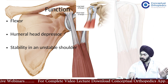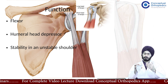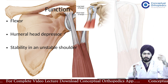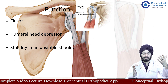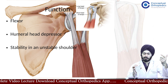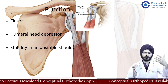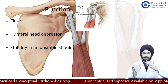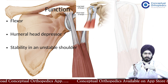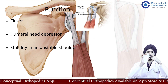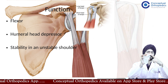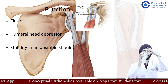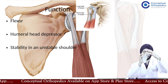When we talk about the function of the long head of biceps, we are referring to the part of biceps that goes intra-articular. The short head of biceps attaches on the coracoid process, so it doesn't go into the joint. It is the long head which goes into the joint.